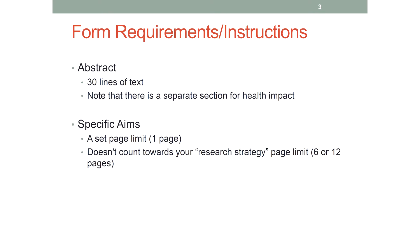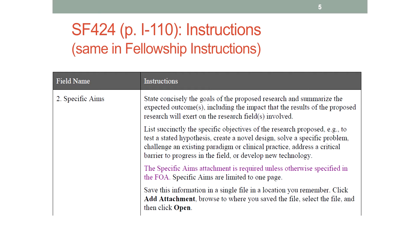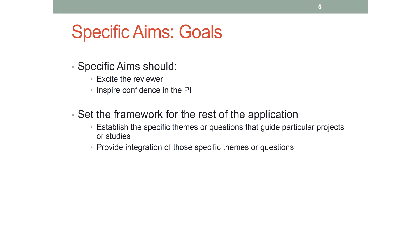In terms of the requirements, they're pretty straightforward. Basically the abstract is going to be essentially a paragraph, and your specific aims are going to be one page. Starting with the specific aims: the goal for these is to excite the reviewer. This is the first thing they read. You want them to think, 'I want to read the rest of this,' rather than, 'How am I going to get through the next six pages?'